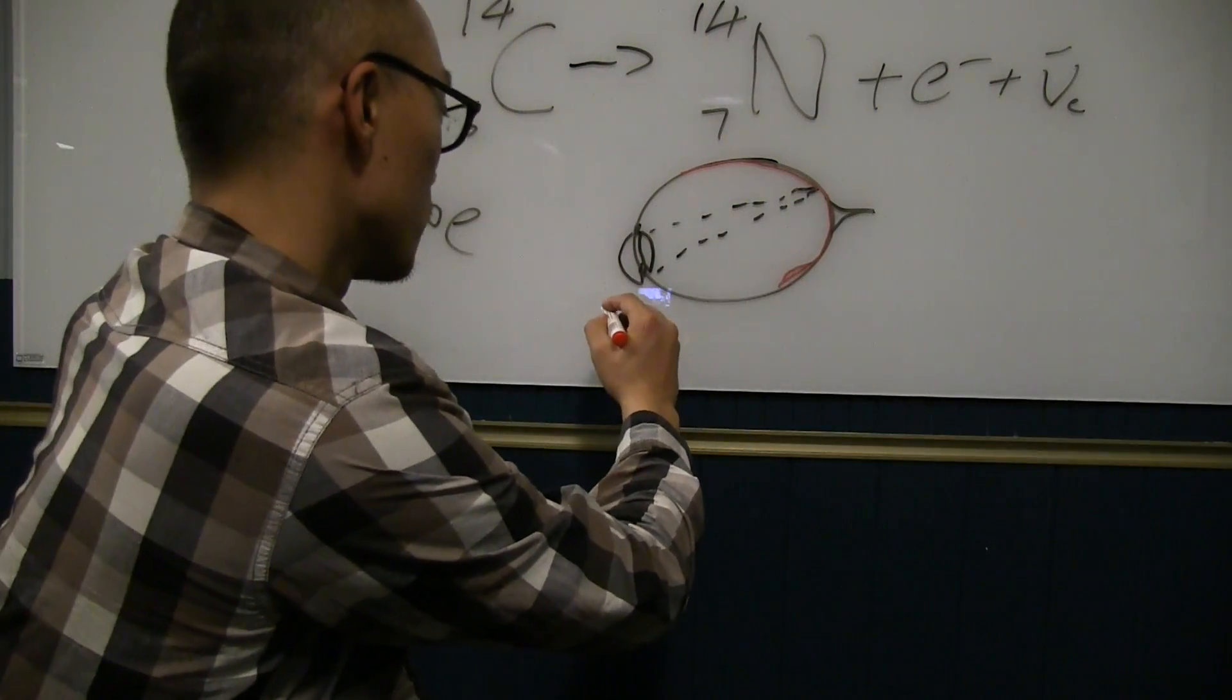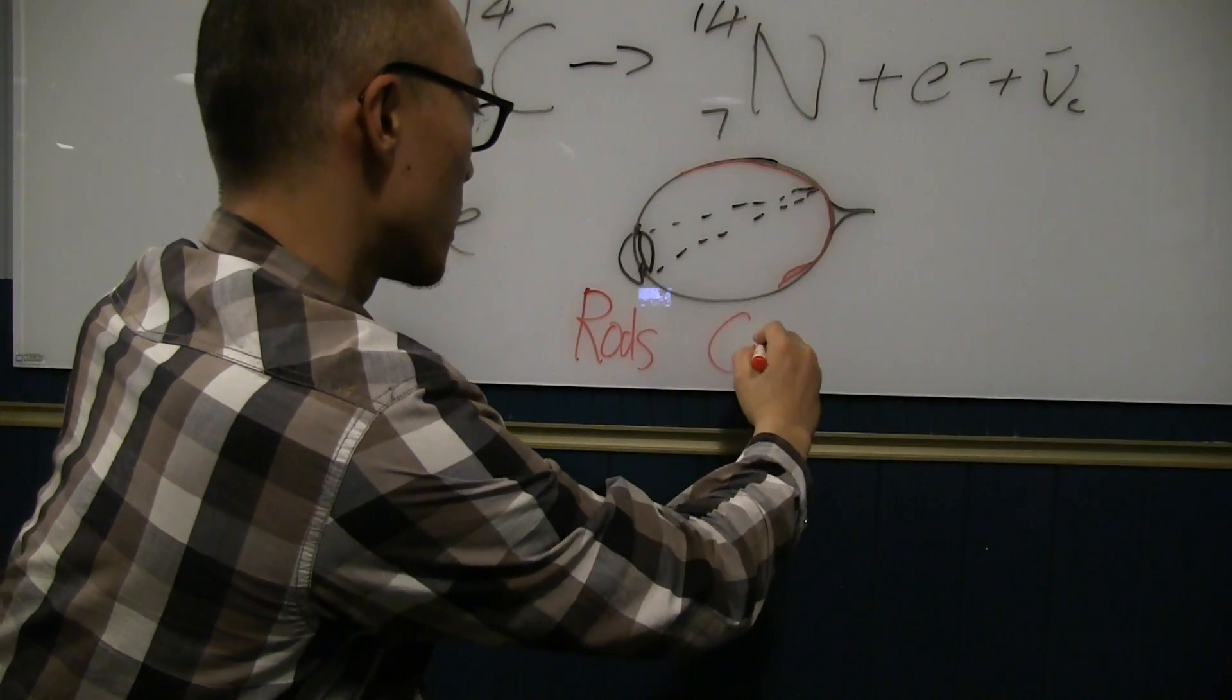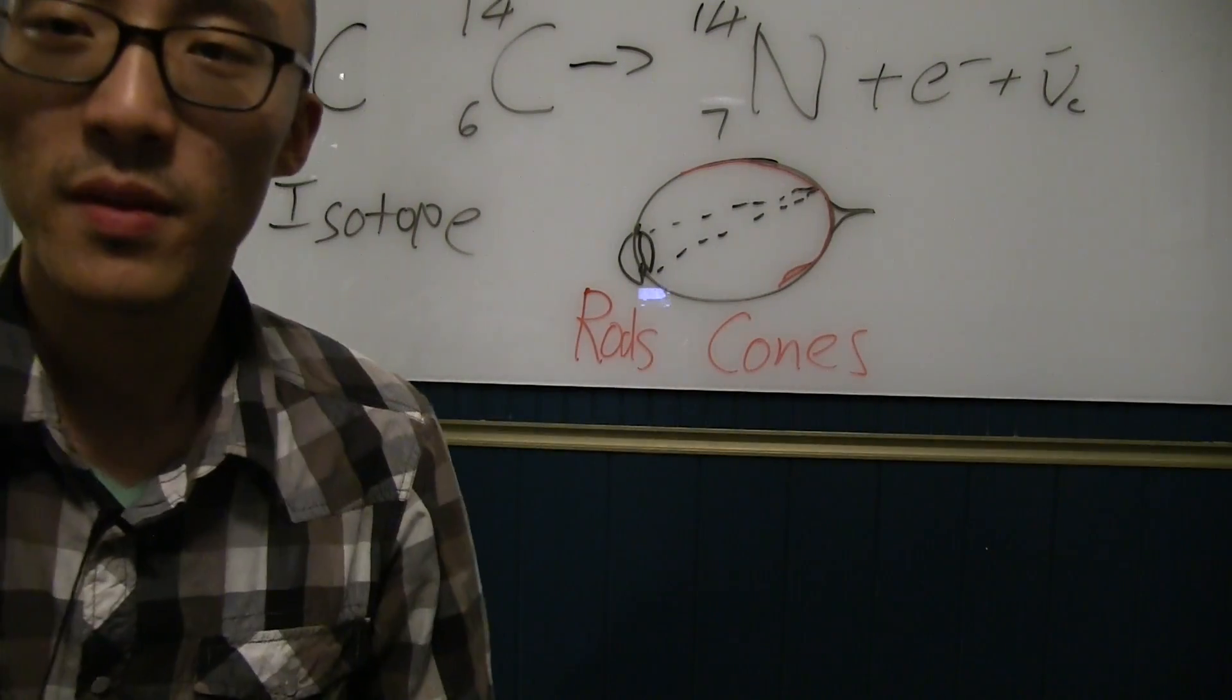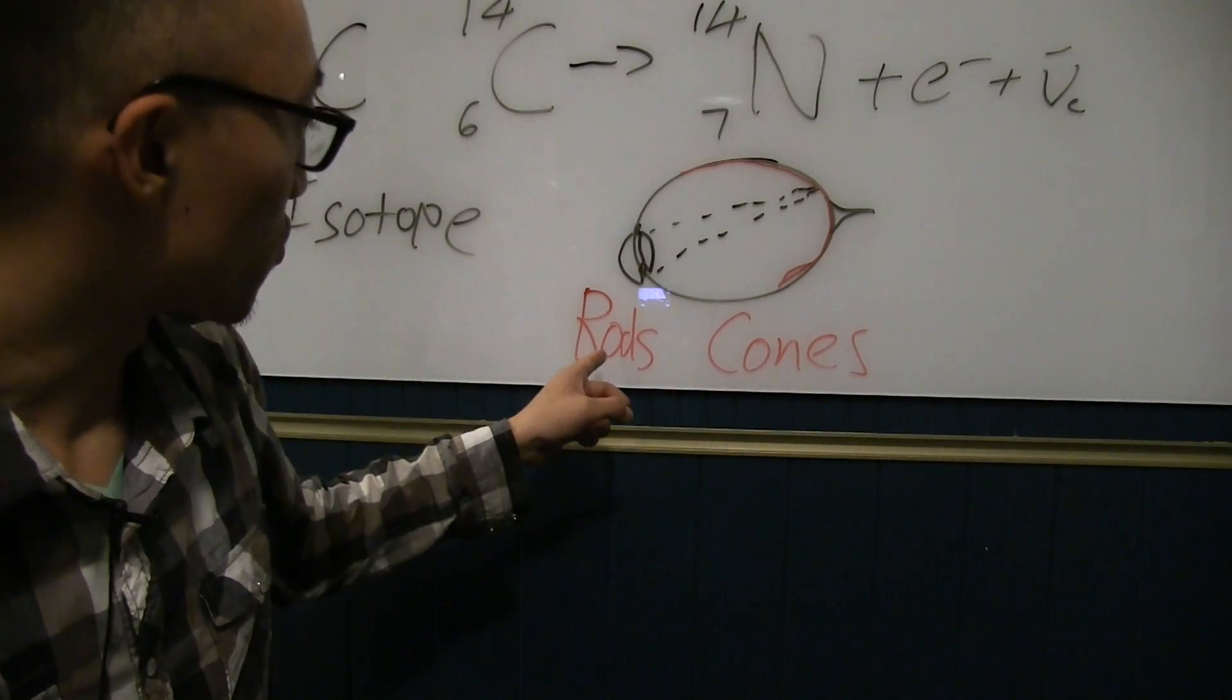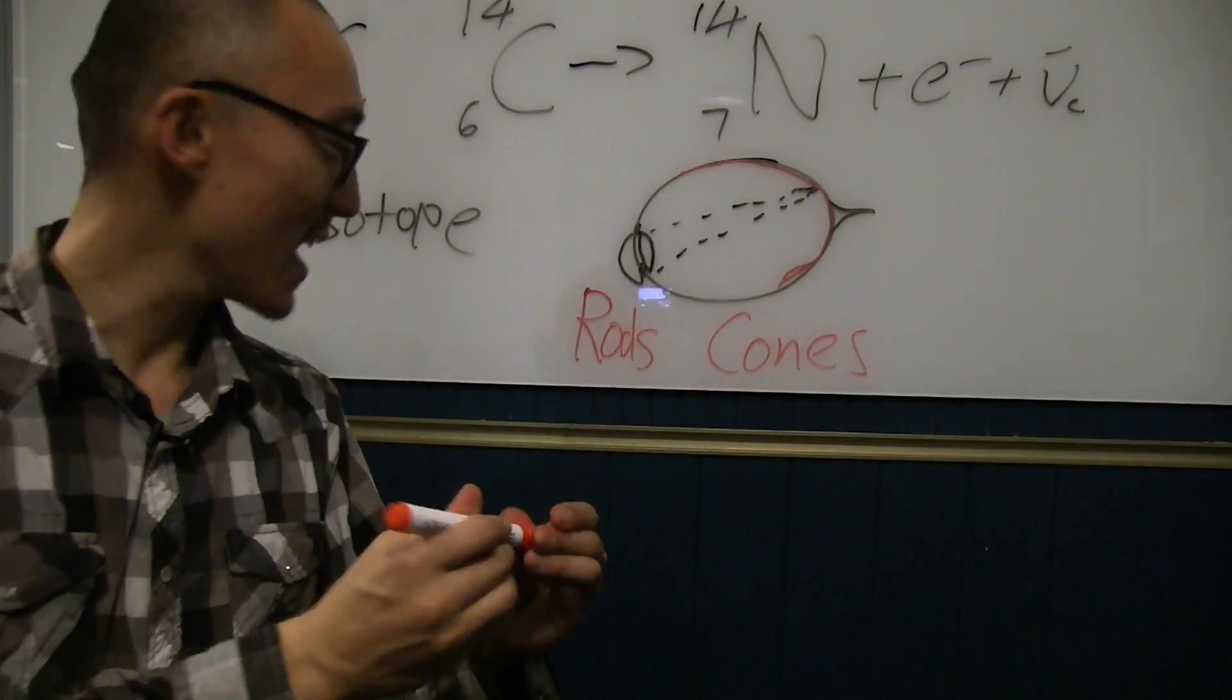One are called rods. And one are called cones. So, I might have spelled rods wrong, by the way. It doesn't matter. Screw my dyslexia.